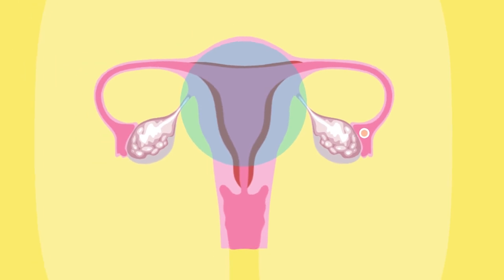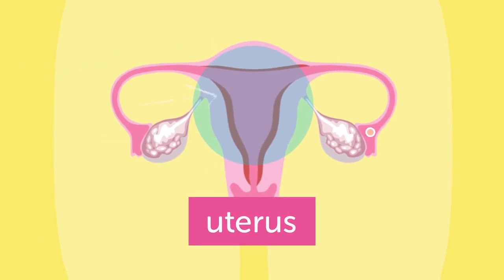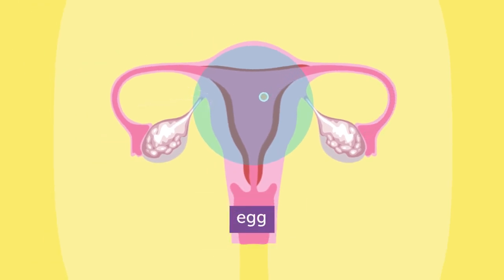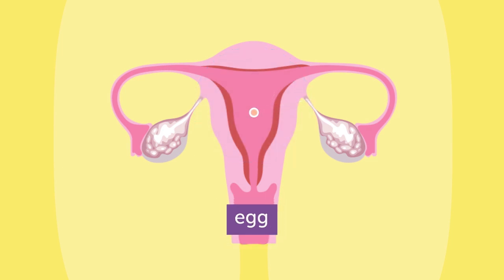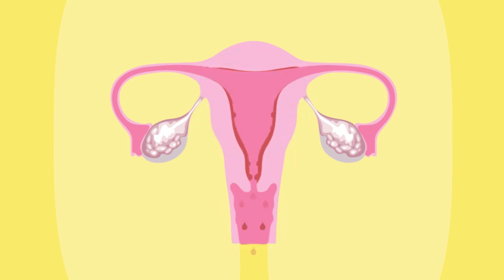During the menstrual cycle, the uterus prepares itself for implantation of a fertilized egg. If this does not occur, the uterus lining is shed from the body. This is known as menstruation, or a period.